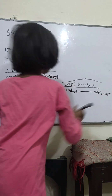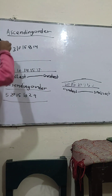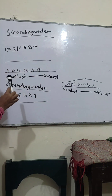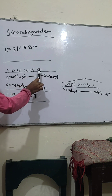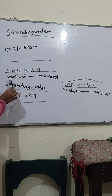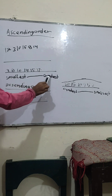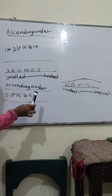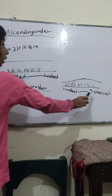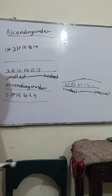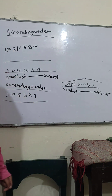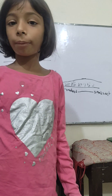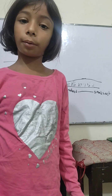Look, if the ascending order will be smaller to bigger, and descending order will be bigger to small. If you liked this video, don't forget to subscribe to our channel. Bye.